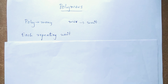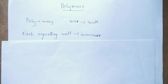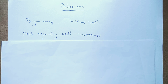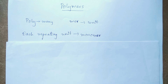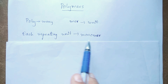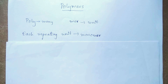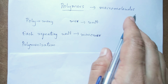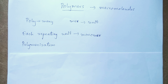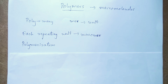Each such repeating unit can be called a monomer. Mono means single, and mer means unit, so a monomer is the single repeating unit of a polymer. The process by which monomers combine together to form a polymer is called polymerization. Therefore, polymers are large molecules or macromolecules formed by the combination of many repeating units known as monomers, and this process is called polymerization.